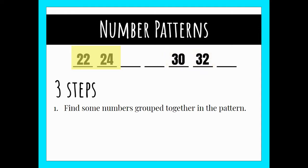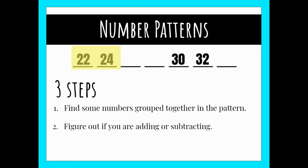I'm actually just going to focus on 22 and 24 since it's at the beginning of my pattern. My next step is I need to find out based on those numbers whether I'm adding or subtracting. I know that if I go from 22 to 24 my numbers are getting greater, so the word greater means I'm going to be adding.